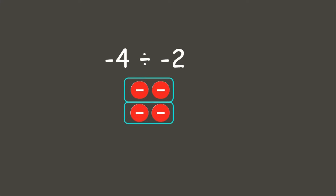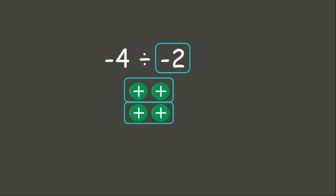Now we need to remember that if our divisor is a negative integer, we need to flip our counters and get its opposite. As you can see, there are two positives in one group, so our answer is positive 2. This means that negative 4 divided by negative 2 is positive 2.